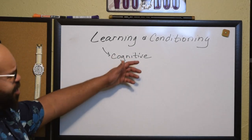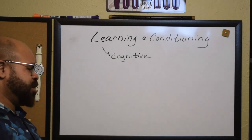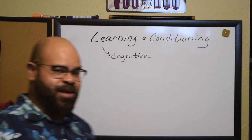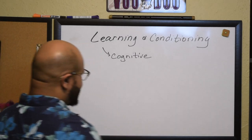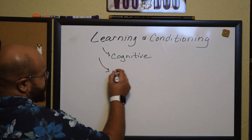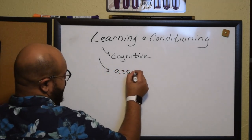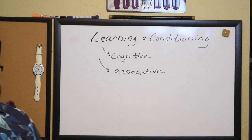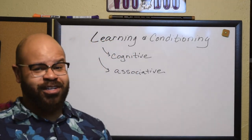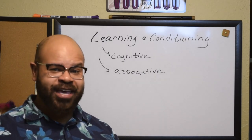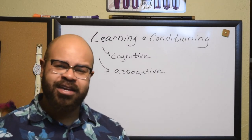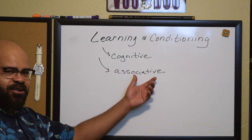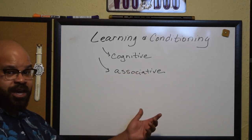We tend to think of learning primarily as cognitive learning, but there are other types of learning — and in fact that's mostly what we're going to talk about today. The other type of learning is called associative learning. Associative learning, or association, really just means that two things go together. This is learning that two things go together, that two things are associated with one another.